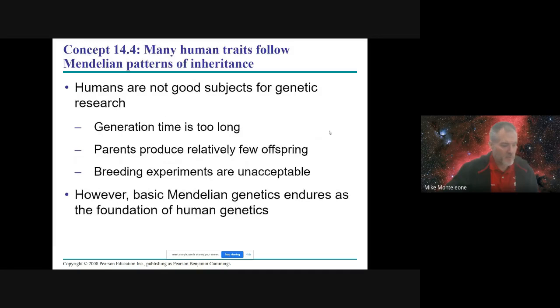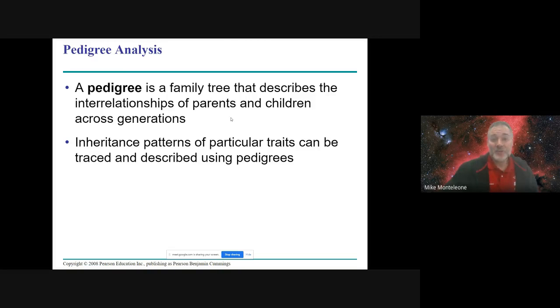So just to make this final point, we talked before about how Mendel made a good choice choosing his pea plant to study heredity. Humans, not good to use. Long generation time. We don't make a lot of offspring. Breeding experiments are unacceptable. Like you can't just have people make babies to see what the outcome will be.